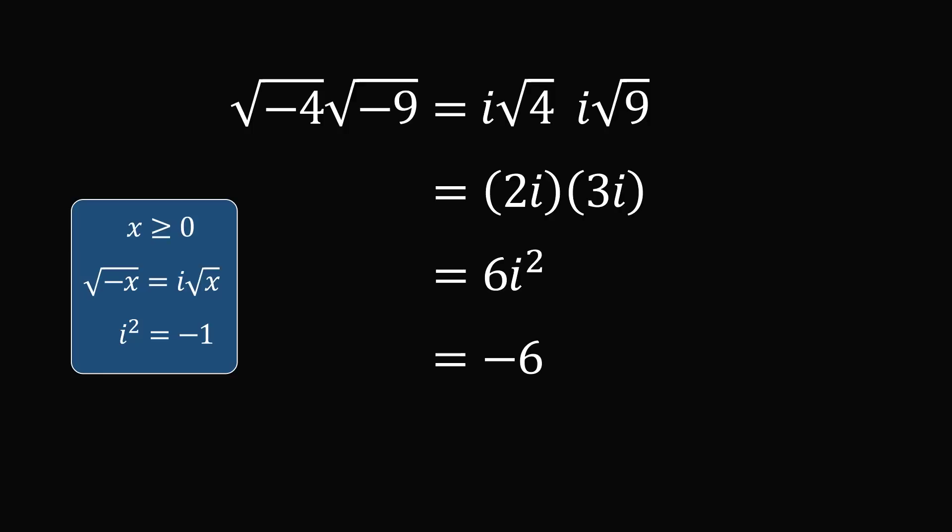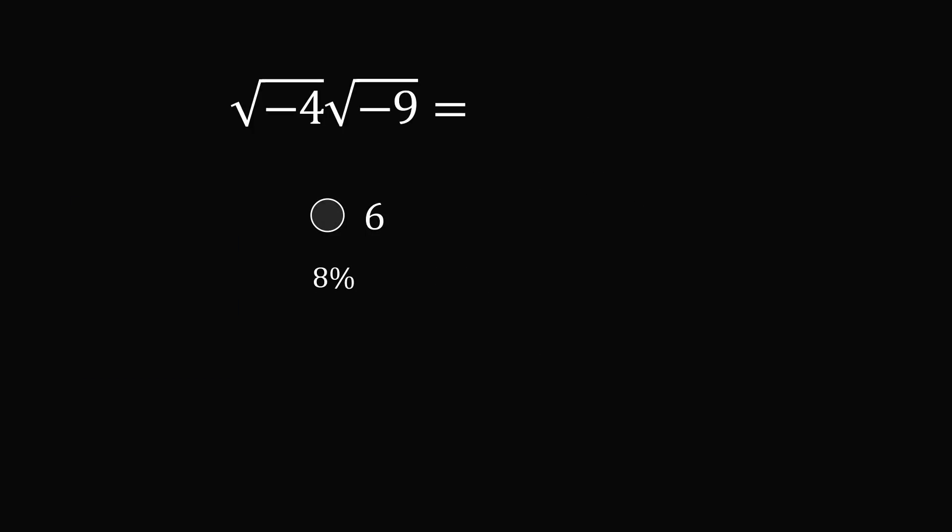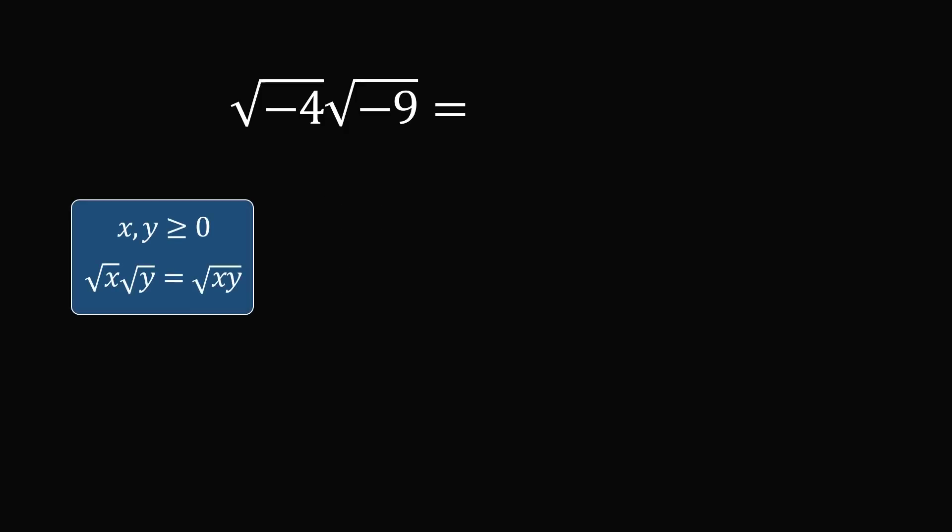So now let's go over the other choices and why I would say they are not correct. The answer choice of 6 was given by 8% of people. Presumably, they remembered the rule that √x × √y = √(xy). However, this only applies if x and y are greater than or equal to 0. So if we have √(-4) and √(-9), we cannot apply this rule. This product will not equal √((-4)×(-9)), which would be √36 = 6. But this is definitely not the correct answer.